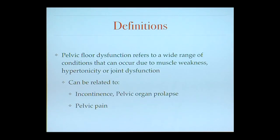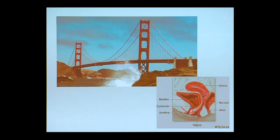Pelvic floor dysfunction refers to a wide range of issues that occur when the muscles are either too weak or too tight, or there's an impairment of the sacroiliac joint, lower back, coccyx, or hip joints. When you think about pelvic support, the muscles and ligaments function similar to a bridge — a cable system that sits just underneath the bladder neck, composed of ligaments and muscles in the pelvic floor.